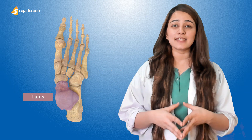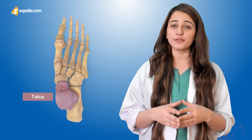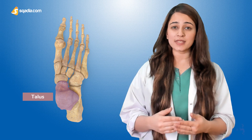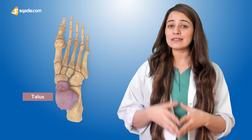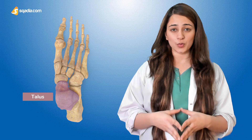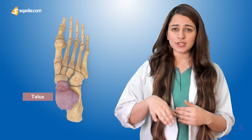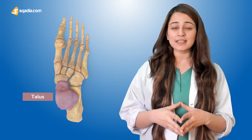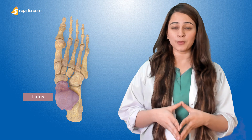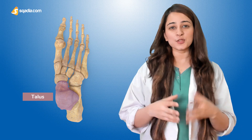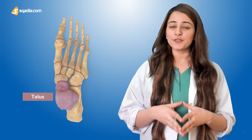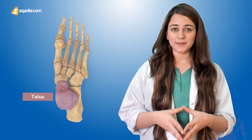Which tarsus bone is the most important and why? The talus is the key bone of the foot because it is present between the ankle and the subtalar joints. During flexion and extension of the ankle joint, the talus is the propulsive bone situated at the root of the first ray.